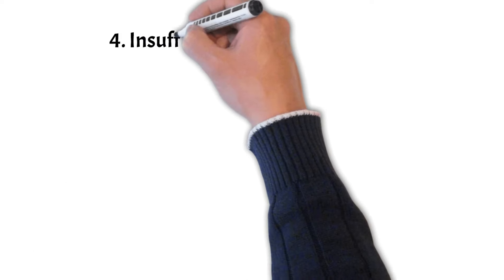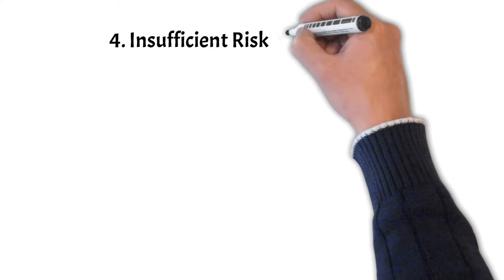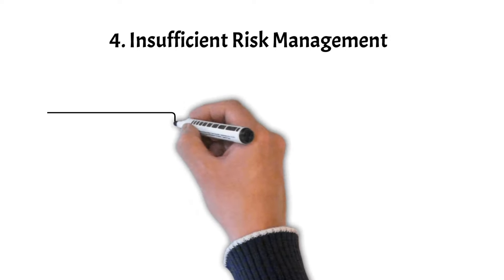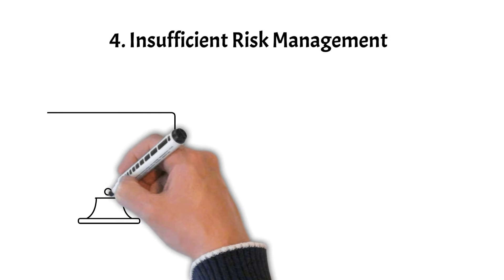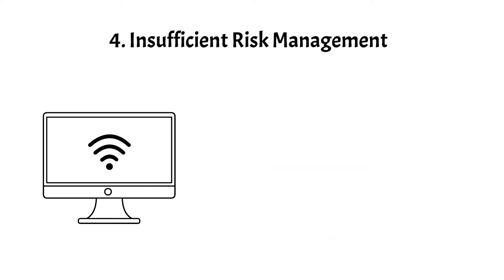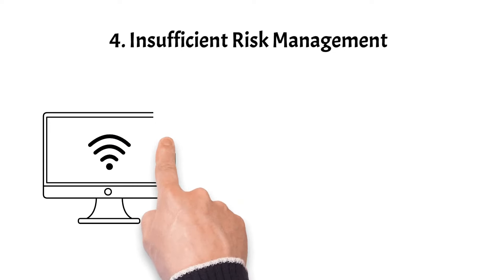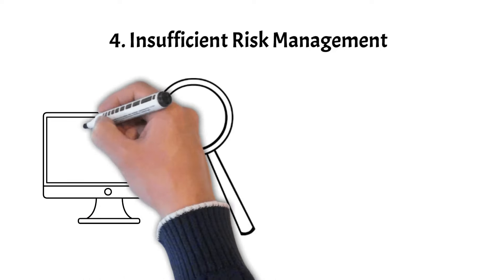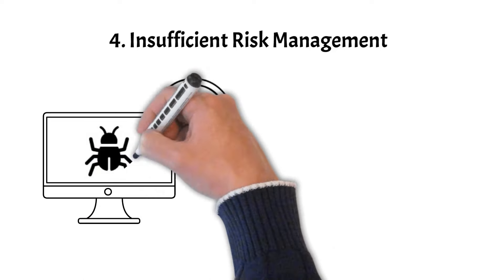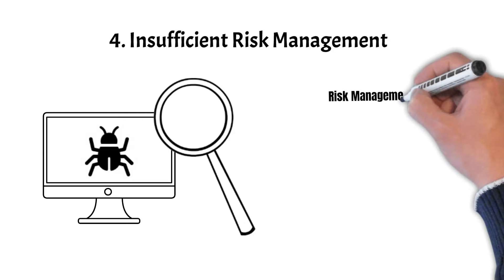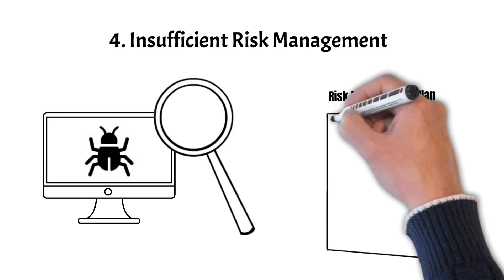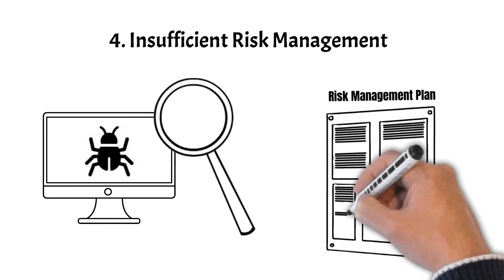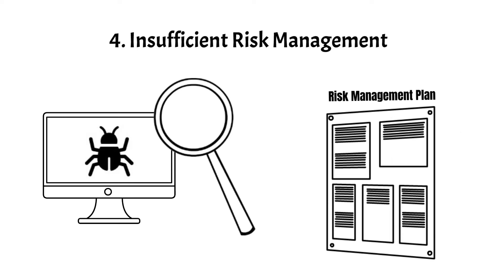Pitfall 4 is insufficient risk management. Projects inherently involve uncertainties and risks that can impact their outcomes. Ignoring potential risks or failing to establish a risk management plan can lead to unforeseen issues that may derail your project. Effective risk management involves identifying potential risks, assessing their potential impact, and developing strategies to mitigate or respond to them. By addressing risks proactively, project managers can better safeguard the project's success.